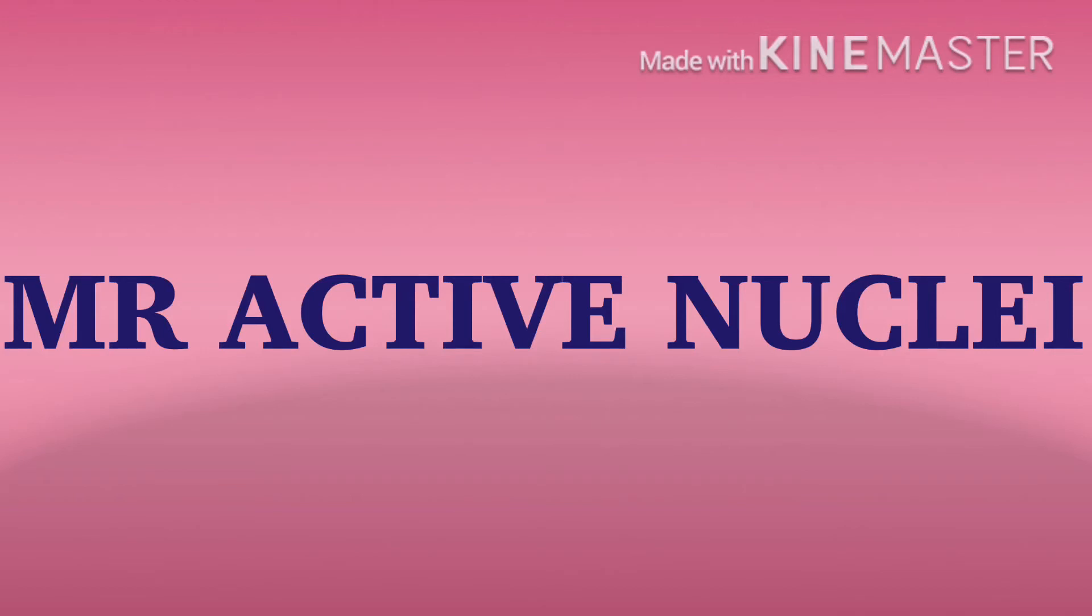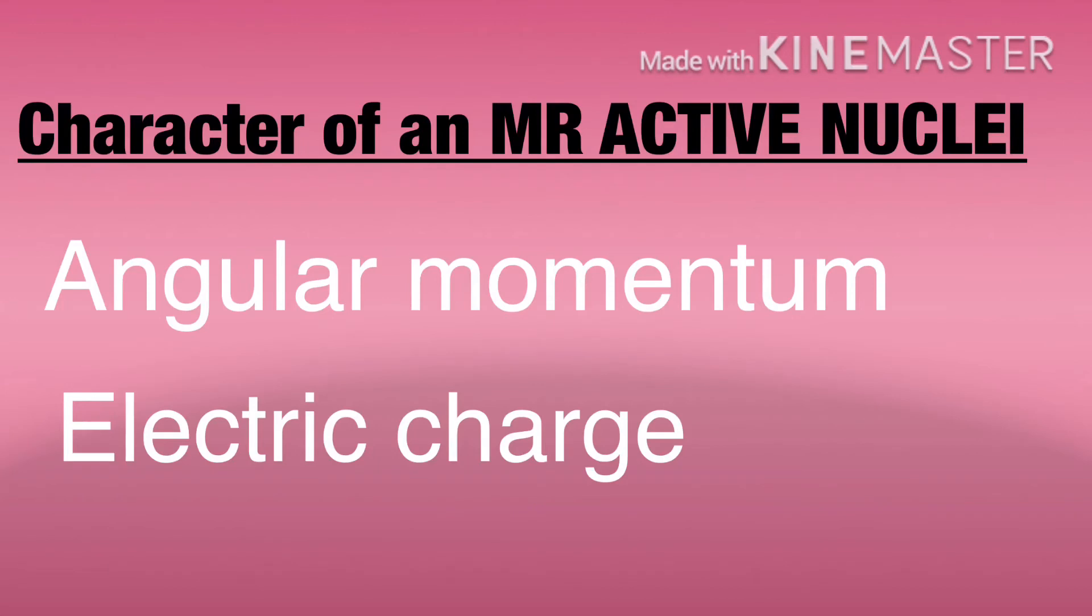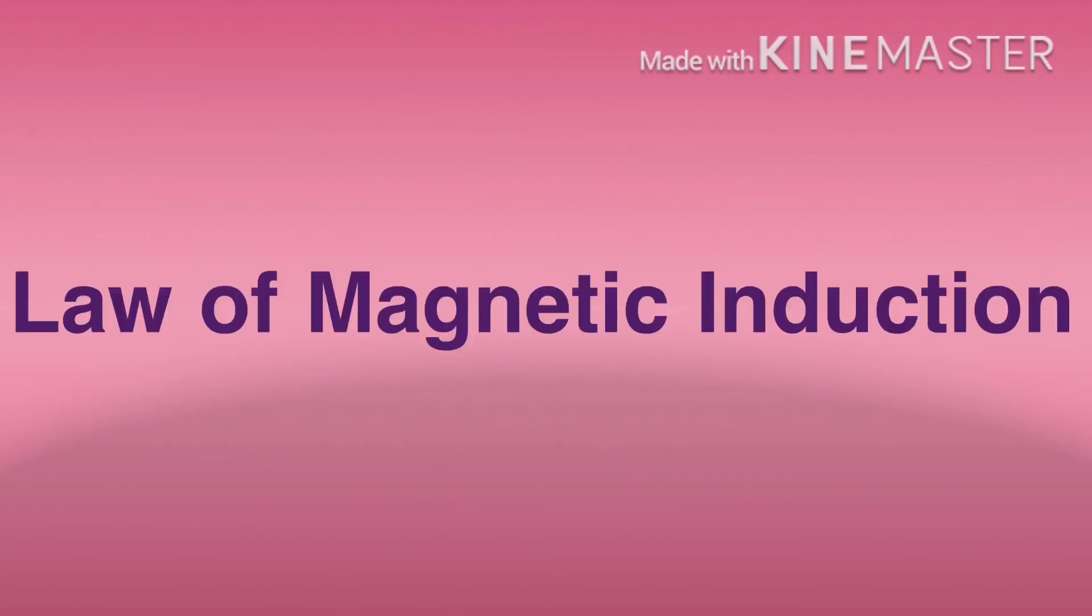MR active nucleus has two characteristics. One is the angular momentum. The second one is the protons which are positively charged, they possess electric charge. According to the law of magnetic induction, it refers to three individual forces: motion, magnetism, and charge. MR active nucleus has motion, that is spinning motion, and charge. So obviously the third component, magnetism, will be automatically induced. That is, our MR active nucleus will act as a magnet and have a tendency to align with the applied external magnetic field.